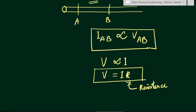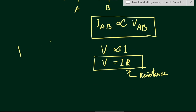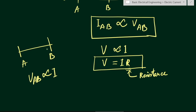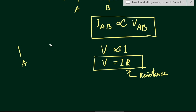The resistance of this copper conductor is the property of this copper material that will oppose the flow of electrons when we apply some potential between two points A and B. So V_AB is proportional to the current, and we can remove the proportionality with a constant — and this constant is known as the resistance of the conductor.